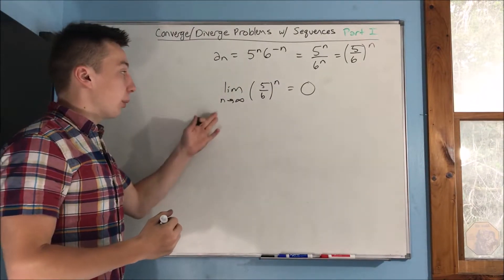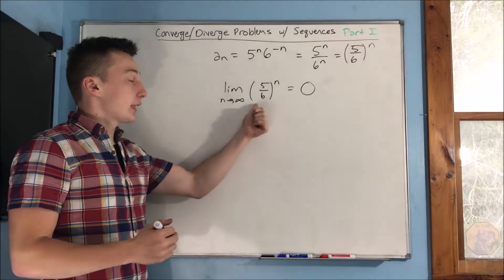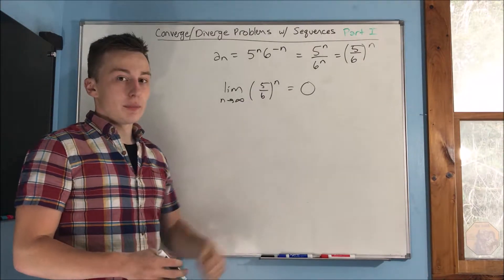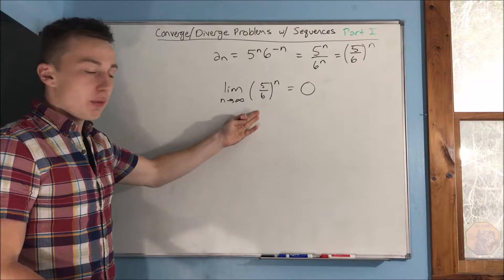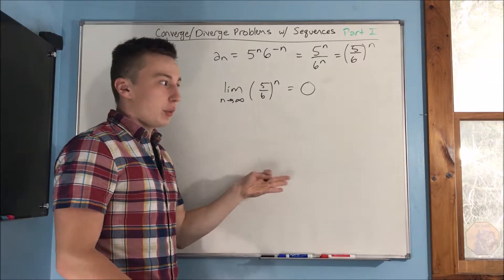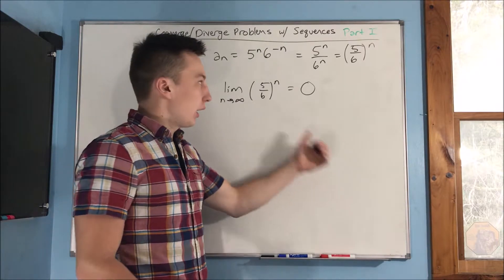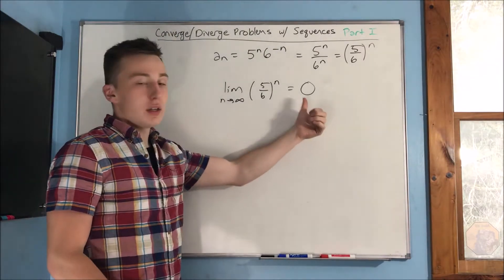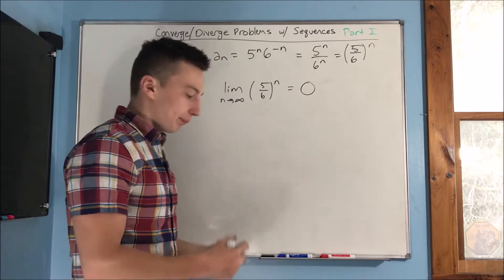So you're going to get the limit as n approaches infinity of 5 over 6 raised to the n equals 0. You're multiplying 5 over 6 an infinite number of times by itself. And you're just going to get an infinitesimally small number, and you keep doing that onto infinity, you get 0.